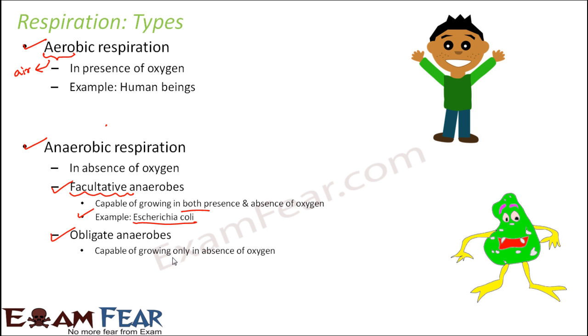They are capable of growing only in absence of oxygen. In presence of oxygen they will not be able to undergo respiration. Now if an organism is not able to undergo respiration, what do you think will happen? Respiration is the process where food is being converted into energy. I'm talking about the assimilated simplest food molecules. They are basically getting converted to energy, and without energy the organism will not be able to do anything.